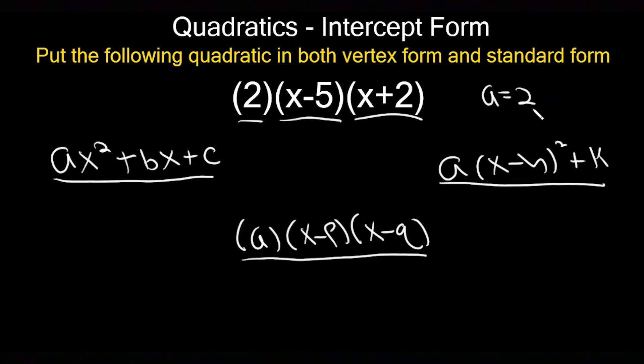Now I want to find my vertex h and k. h represents the x value of the vertex and k represents the y value. There's an easy formula you can use. To find the x value of your vertex, you're going to do x = (p + q)/2.